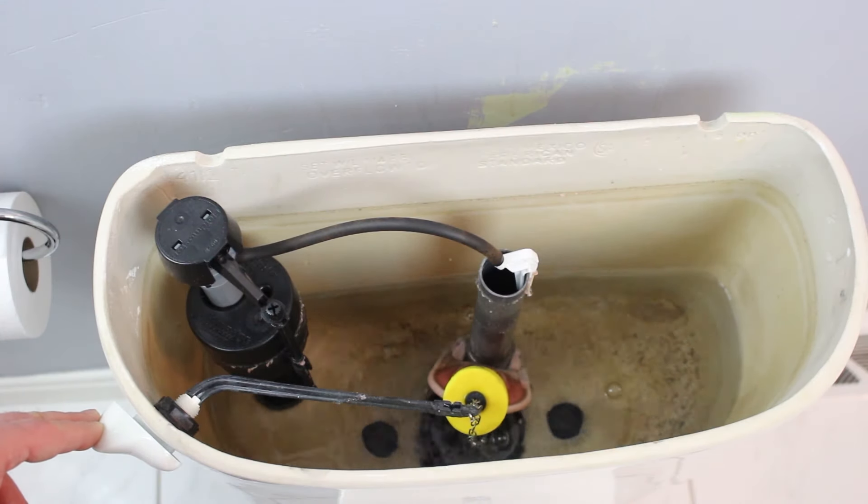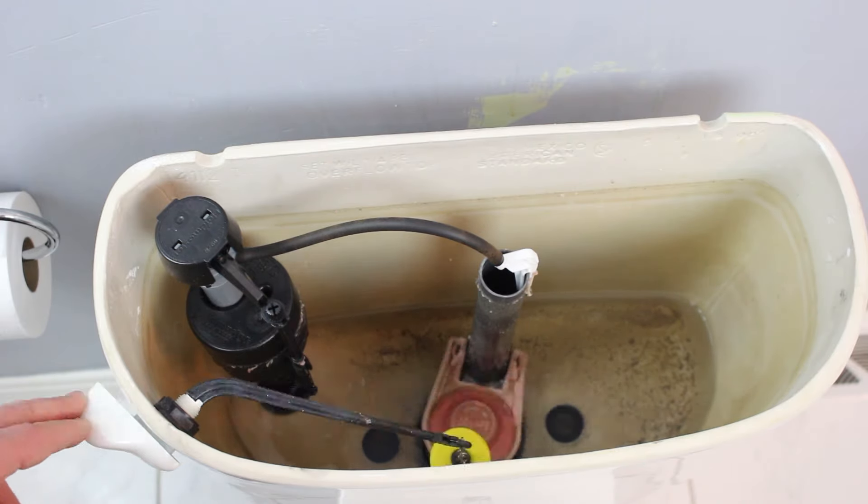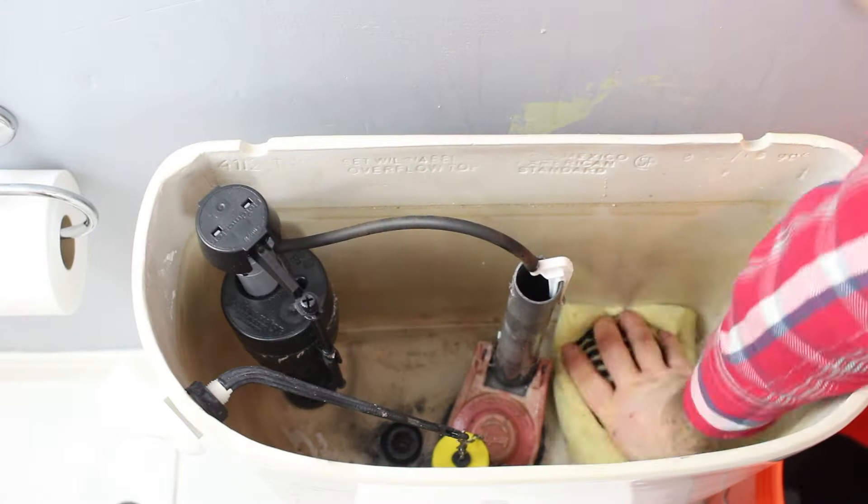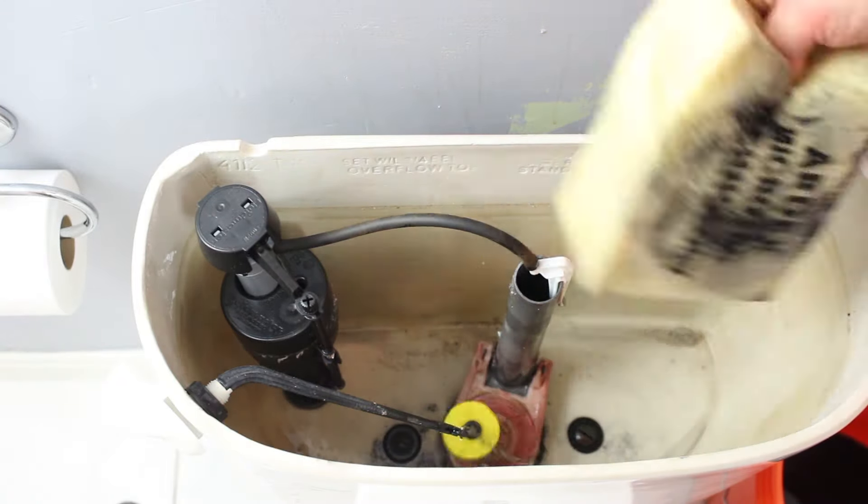Pull down on the lever of the toilet tank until most of the water is removed from the tank, and then you can use a sponge or a cloth to remove the excess water from the tank. This only takes a minute or two. It's super easy.